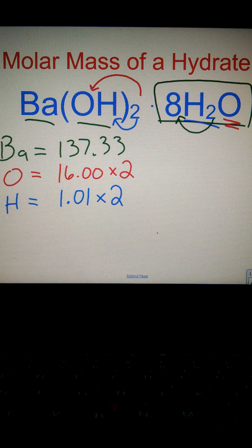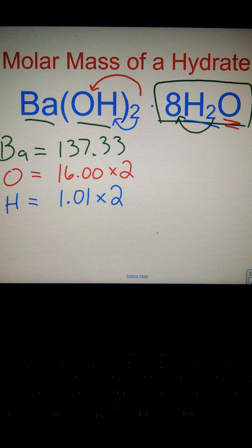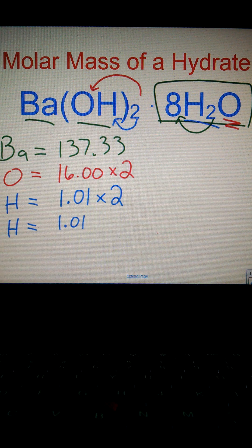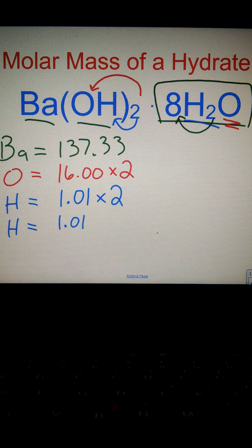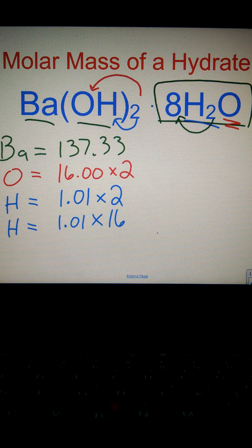Each water molecule has two hydrogens and we have eight of them here. So if we're going to do the hydrogen again, H equals 1.01 grams per mole. Eight times two, we have 16 atoms of hydrogen.